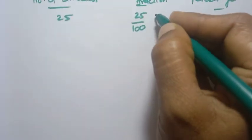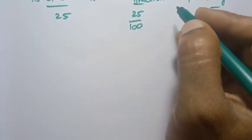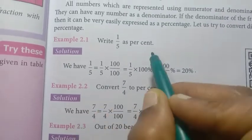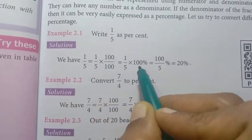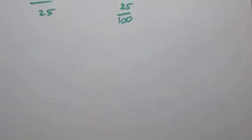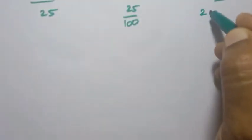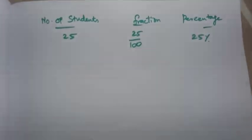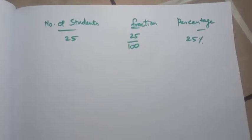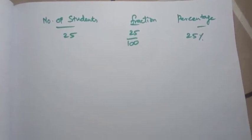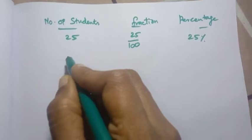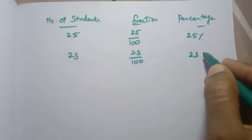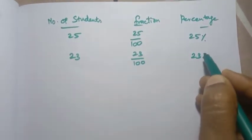If we write 25 by 100 as a percentage, the numerator over 100 gives 25 percent. The second category has 23 students; the fraction is 23 by 100 — 23 percentage.